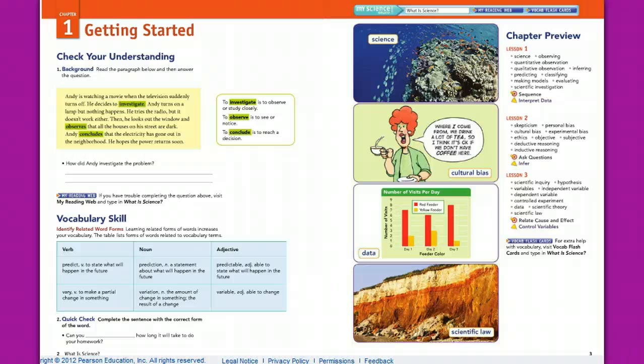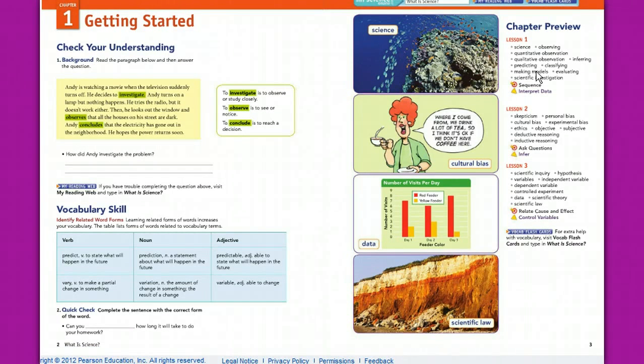The beginning of each chapter has a getting started page where we check your understanding of what you might know about that particular topic and we answer various questions. You will be able to write the answers in the book. We also do a lot of vocabulary study with prefixes, suffixes, and building vocabulary. There's also a chapter preview page where we go over the vocabulary of each lesson.